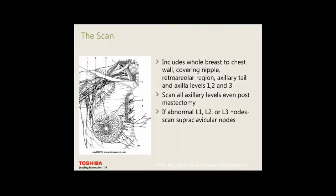The scan must include the whole breast to the chest wall, covering the nipple and retro-areolar region, the axillary tail, and axillary levels 1, 2, and 3. We scan all axillary levels even post-mastectomy. If any are abnormal, we go on to the supraclavicular nodes.